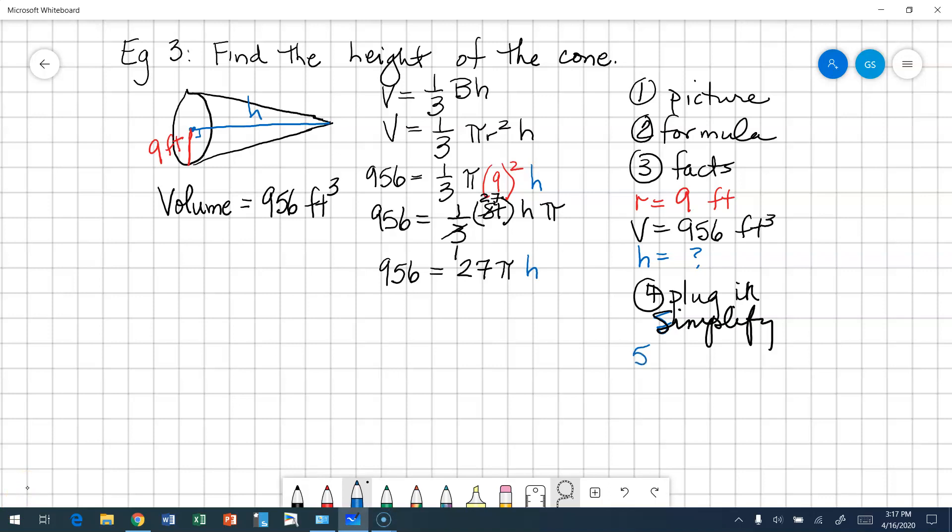All right, next. Let's go ahead and isolate our h, right? We want to find out h, so we are going to divide both sides by 27 pi. All right, 956 divided by 27 times, we're going to use that pi button on that calculator. 27 pi over 27 pi will be 1. So that is equal to h. So it becomes just a calculator problem.